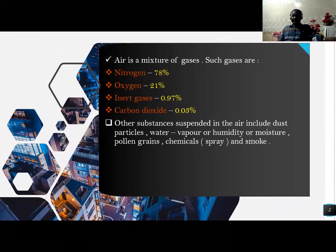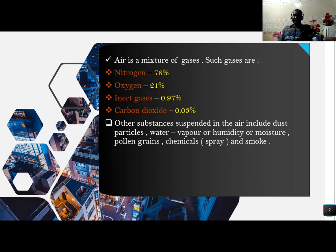What is air? Air is a mixture of gases. Such gases are: Nitrogen, which represents 78%; Oxygen, which is 21%; Inert gases, also known as noble gases, at 0.97%; and Carbon dioxide at 0.03%.